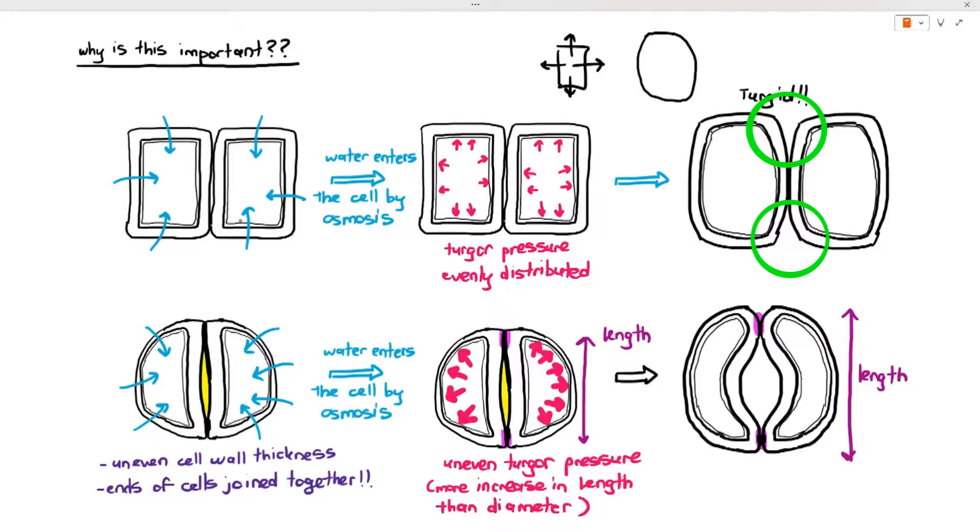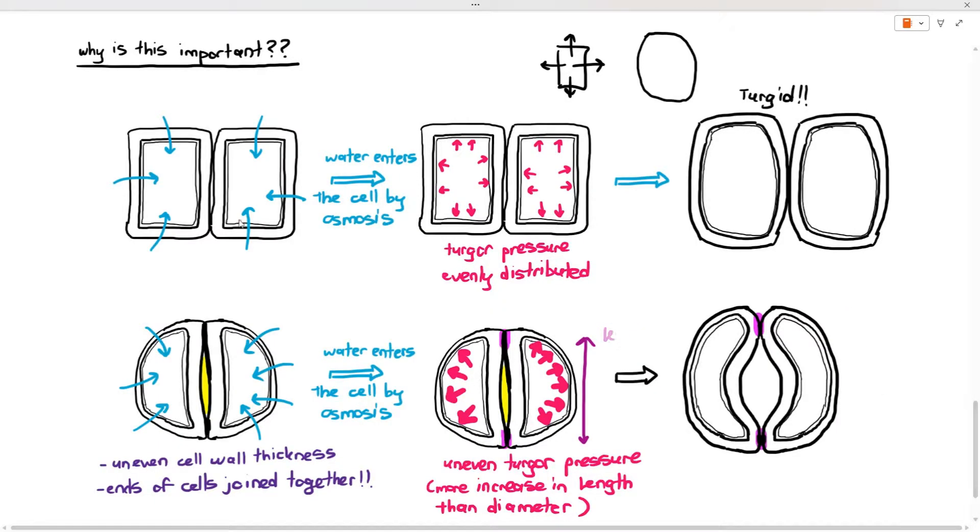So in this case the reason why this is important is because when the guard cells expand in an uneven manner it causes the opening of the pore to become bigger, and that is how the stoma opens more to allow gas exchange or transpiration.